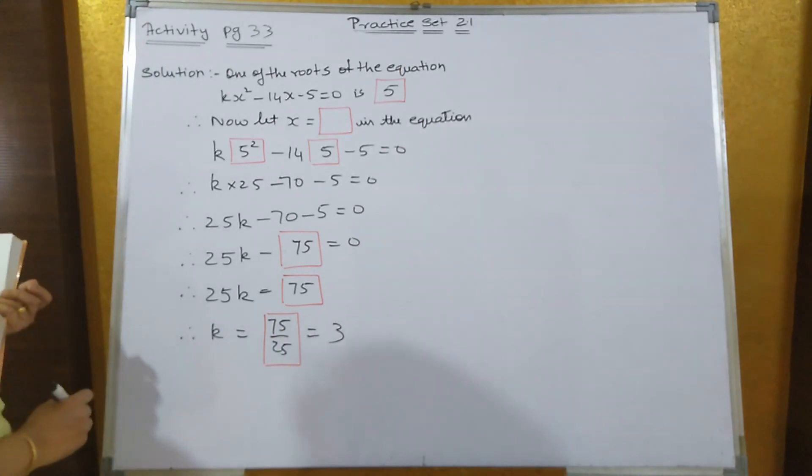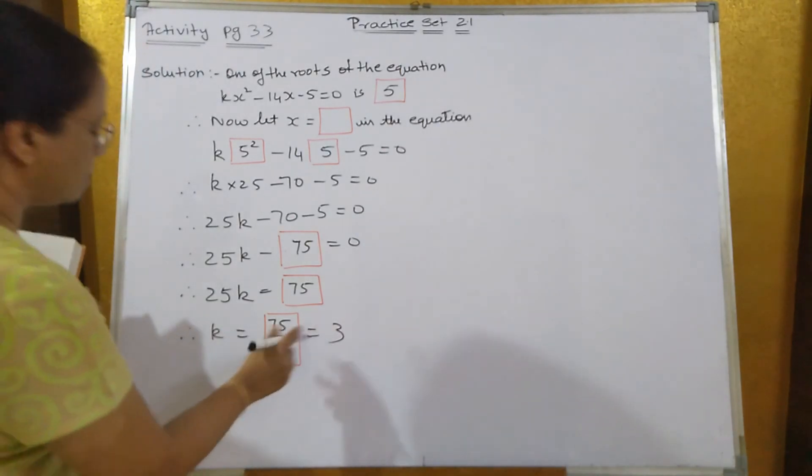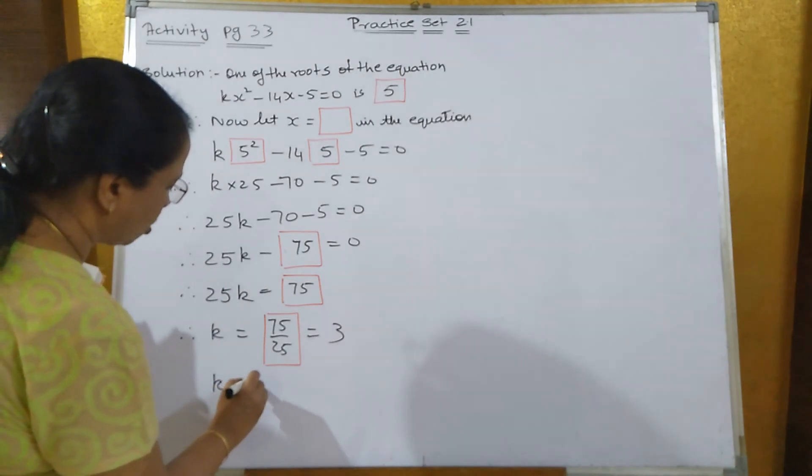When you divide 75 by 25, you'll get the answer equal to 3. So the value of k is equal to 3.